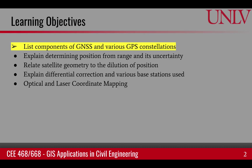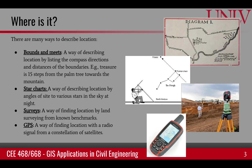So first, let's talk about the components of GNSS and what it is. An important question has always been there whether you are walking through an area or planning to manage an area — the question is: where is it? And there have been many ways to describe it. The oldest way is called bounds and meets — a way of describing location by listing the compass directions and distances of the boundaries.